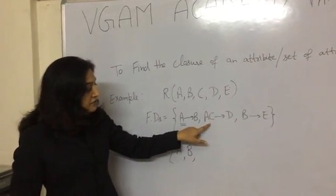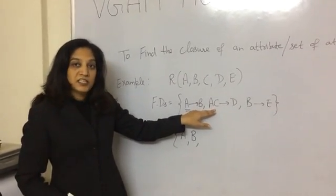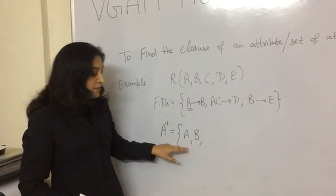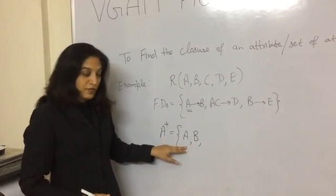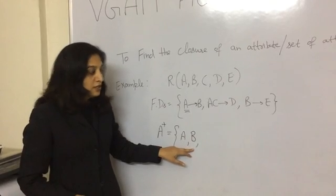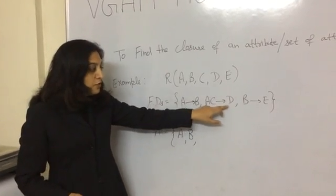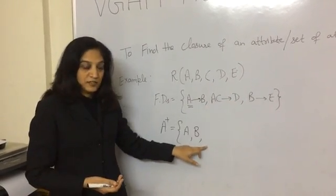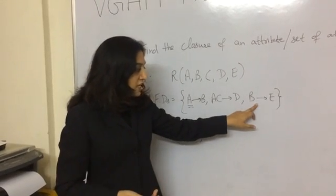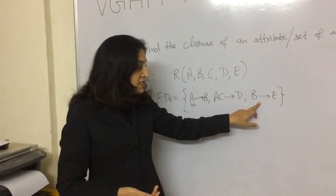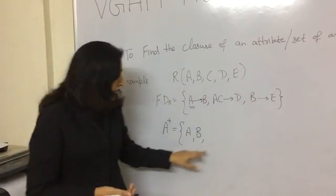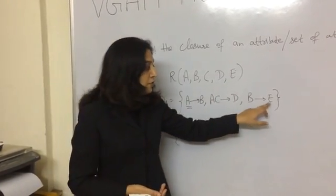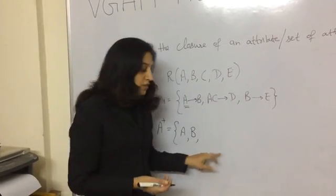In the next functional dependency, the left side contains two attributes, A and C. Both these attributes should be in the set. A is there, but C is not there, so we cannot put its right side D in the set. Moving to the next functional dependency, its left side is B. B is in the set, so we will put E also in the set.